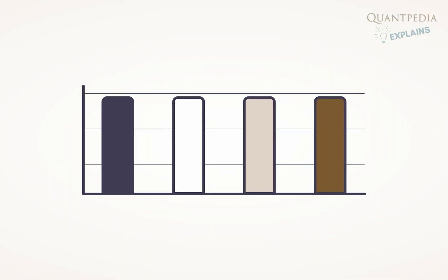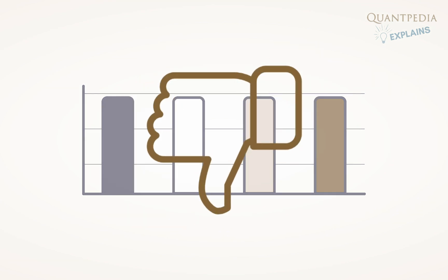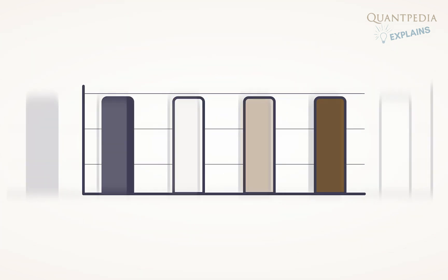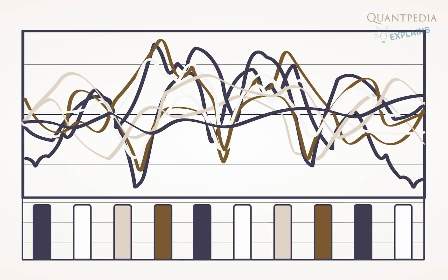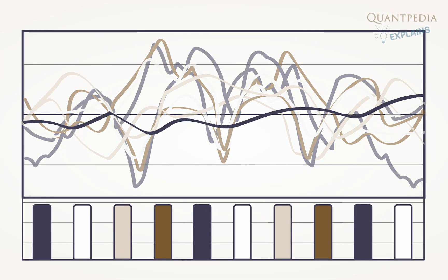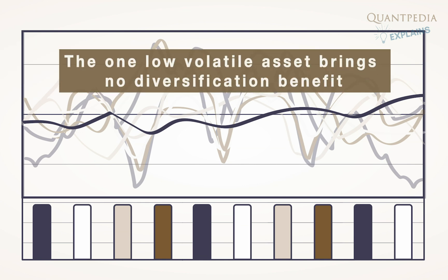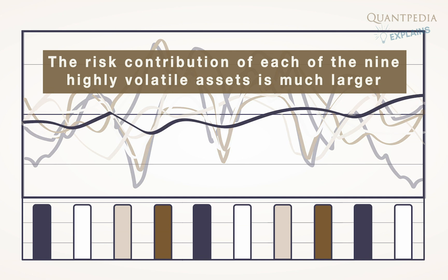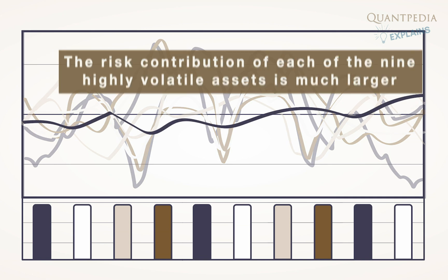An equally weighted portfolio can be a great choice in many cases; however, it has one significant disadvantage when it comes to risk. Imagine we have an equally weighted portfolio consisting of 10 assets, of which all but one are highly volatile. In this case, the one low volatile asset brings no diversification benefit. Additionally, the risk contribution of each of the nine highly volatile assets such as stocks or commodities is much larger than the risk contribution of the one low volatile asset such as bonds.